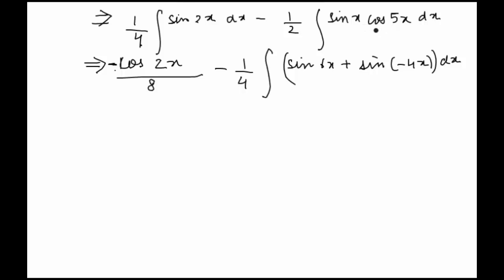This is now minus cos 2x by 8 as it is, minus 1 by 4 times minus cos of 6x upon 6 plus cos of 4x upon 4, plus the constant of integration c.